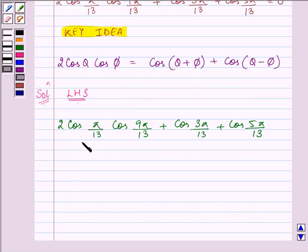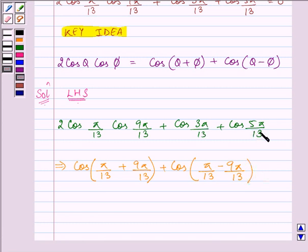Now, if you carefully analyze, our first term is in the form of 2 cos θ cos φ because our θ and φ are there. So we can change them into cos(θ + φ) plus cos(θ - φ). So we can change them and then these two terms will be written along with it, cos 3π/13 plus cos 5π/13. Now on simplifying, we have cos 10π/13 plus cos(-8π/13) plus cos 3π/13 plus cos 5π/13.